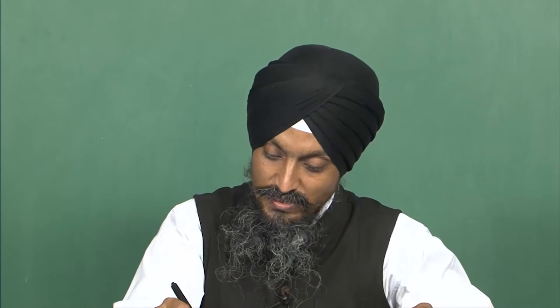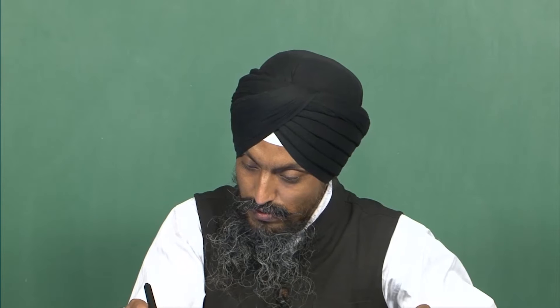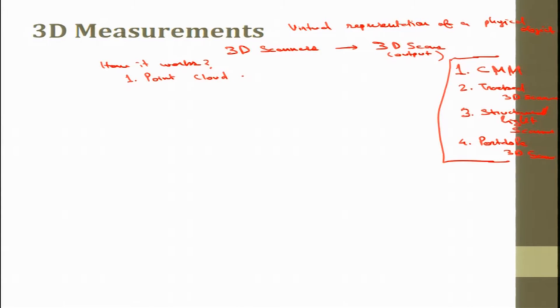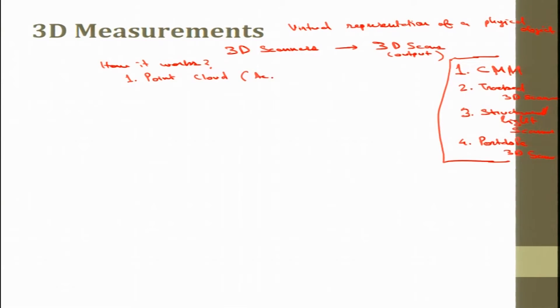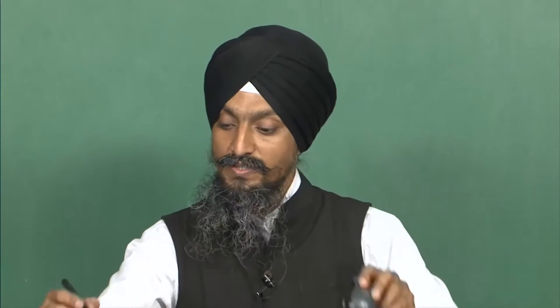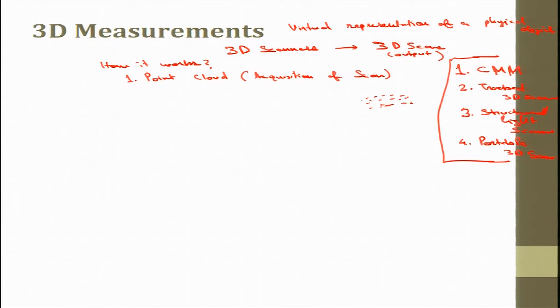How does 3D scanning work? When we use a CMM machine, it will try to touch the points. The first step produces the point cloud, which is the acquisition of scan data — the first input from the surface. If I need to produce a surface, the points would be produced first. This kind of points produced is the point cloud. The scanning results are represented using free form or unstructured form.